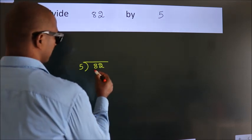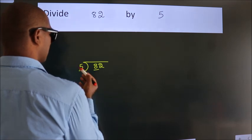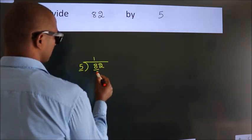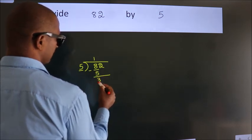Next, here we have 8, here 5. A number close to 8 in 5 table is 5 once 5. Now, we should subtract. We get 3.